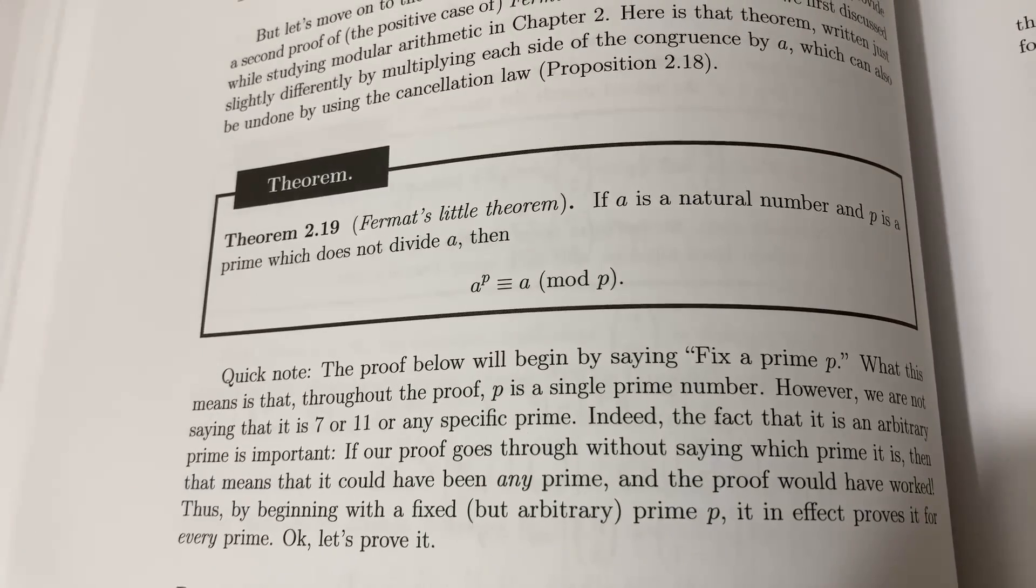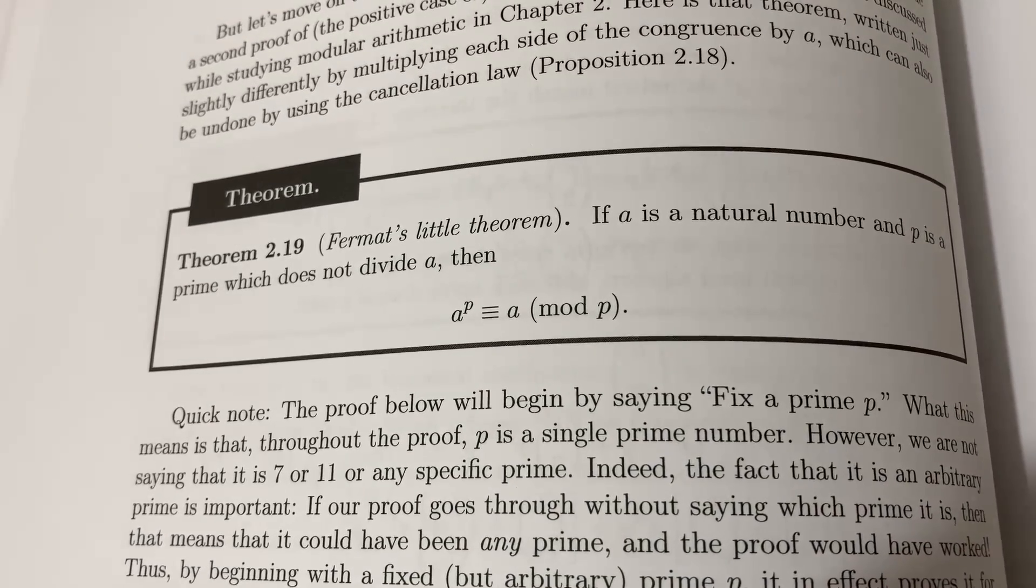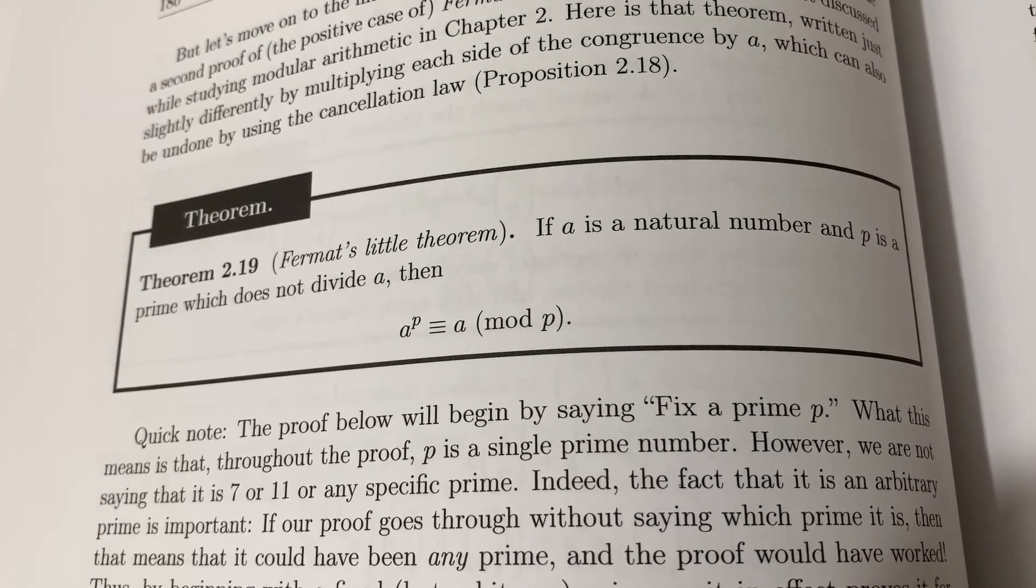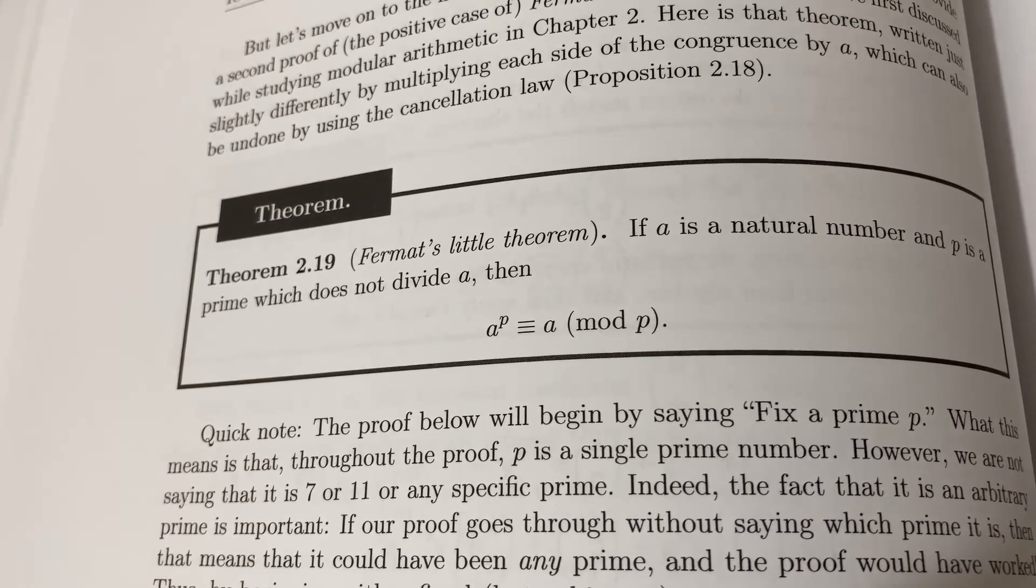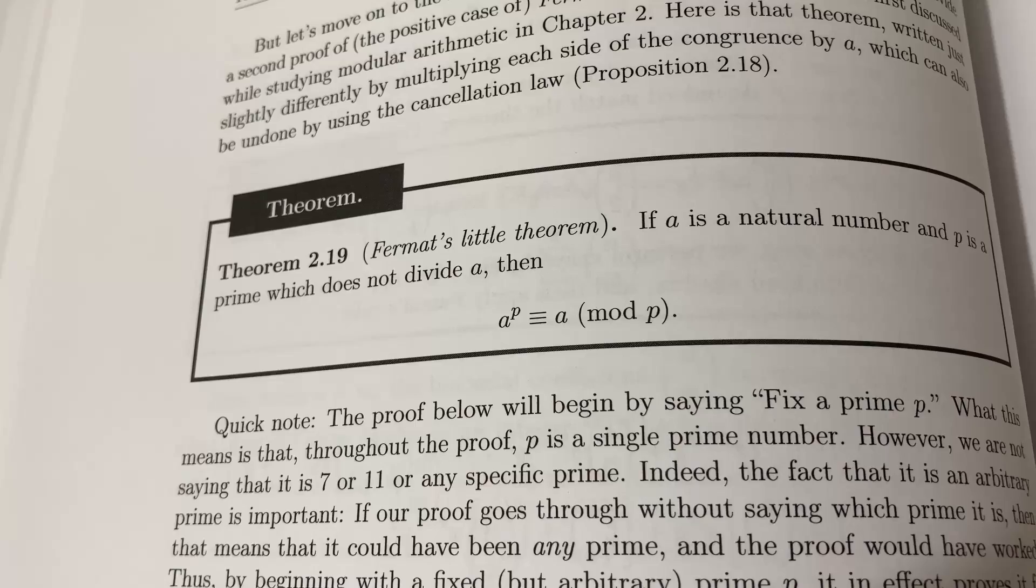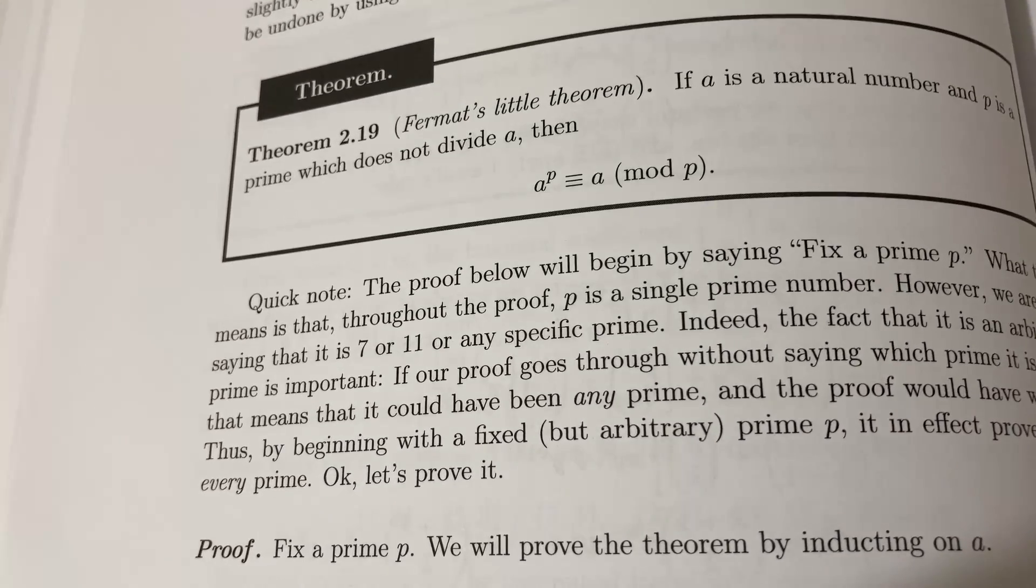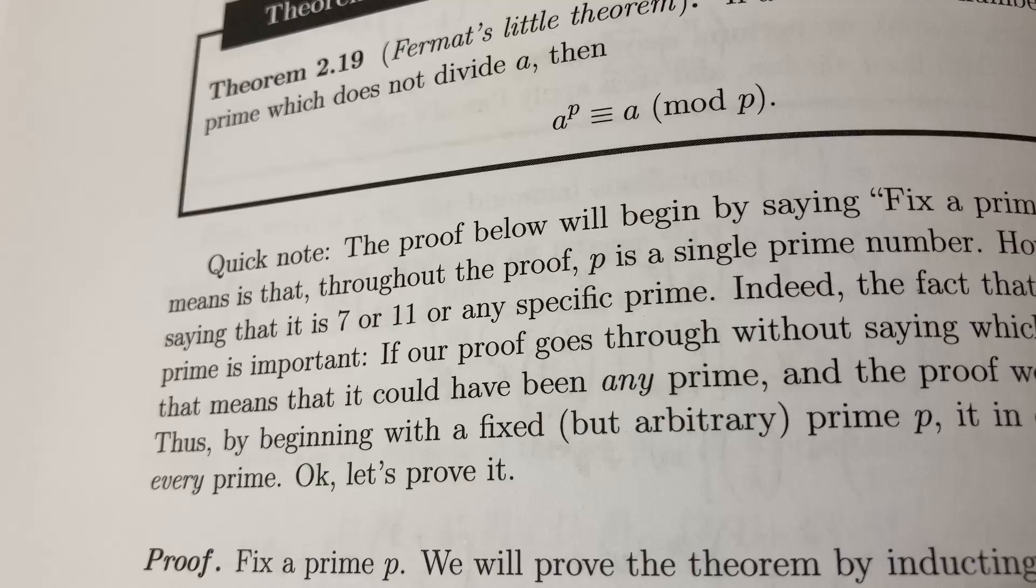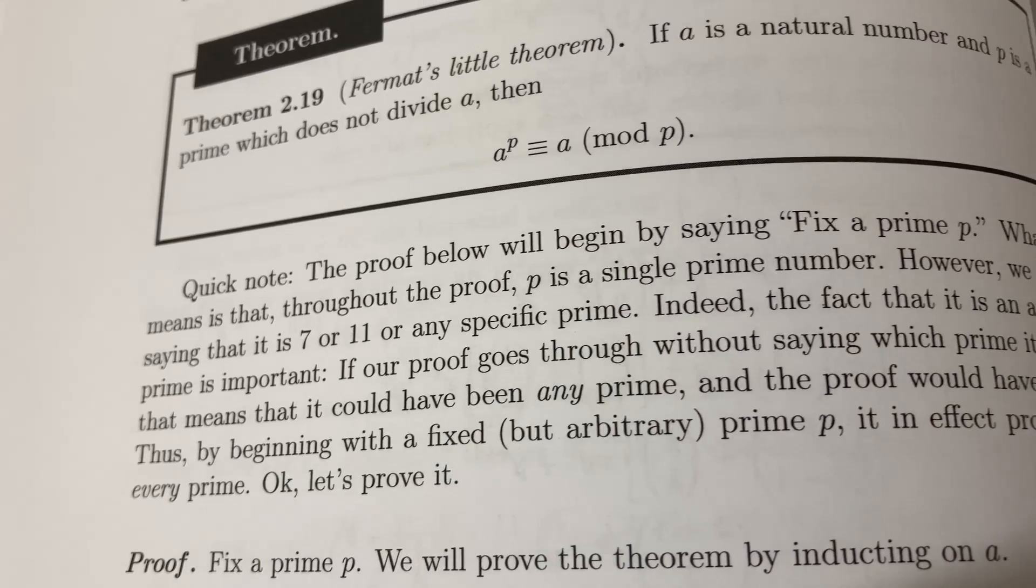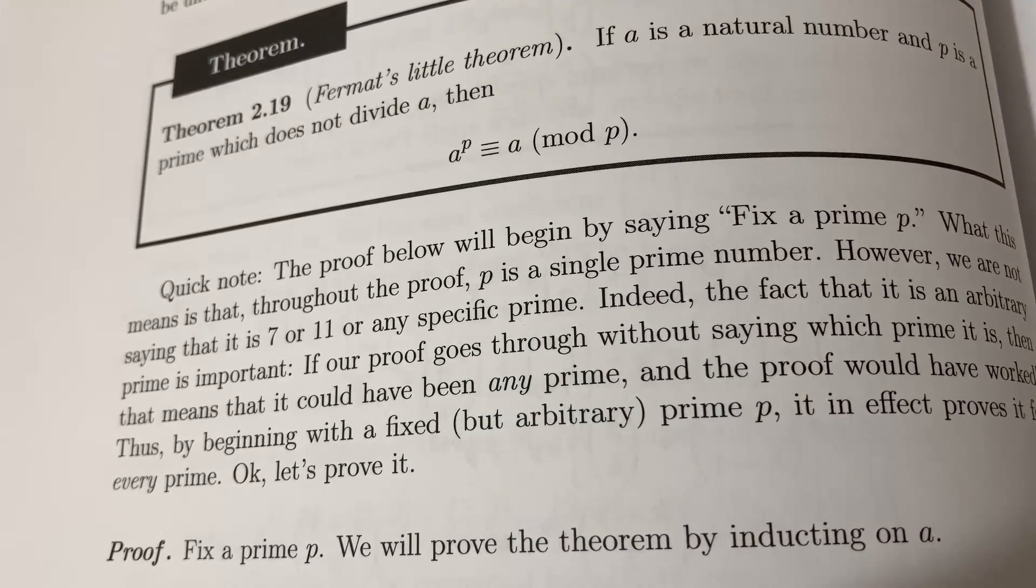Here we have an interesting piece of mathematics. Fermat's Little Theorem: if a is a natural number and p is a prime which does not divide a, then a to the p is congruent to a modulo p. And the reason I'm pointing out this particular theorem is for what Jay says next. Quick note, the proof below will begin by saying fix a prime p. What this means is, throughout the proof, p is a single prime number.